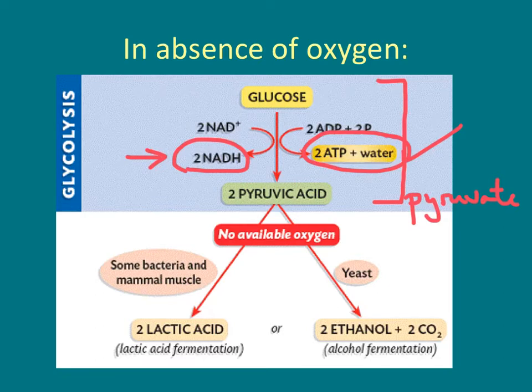In the presence of oxygen, pyruvate is taken into the mitochondria, where it gets converted into acetyl-CoA, and that molecule then goes through the citric acid cycle. However, in the absence of oxygen, there are two pathways for fermentation.